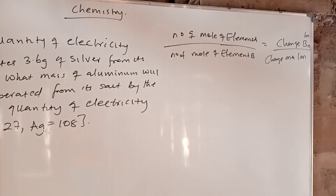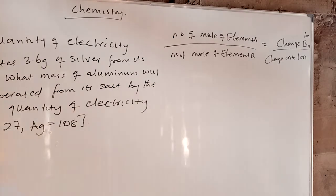We are into the second law of electrolysis, and we have already done parts 1, 2, and 3. This is part 3 of the video on electrolysis. The formula for calculating the second law of electrolysis is: number of moles of element A over number of moles of element B equals the charge on the B ion over the charge on the A ion.